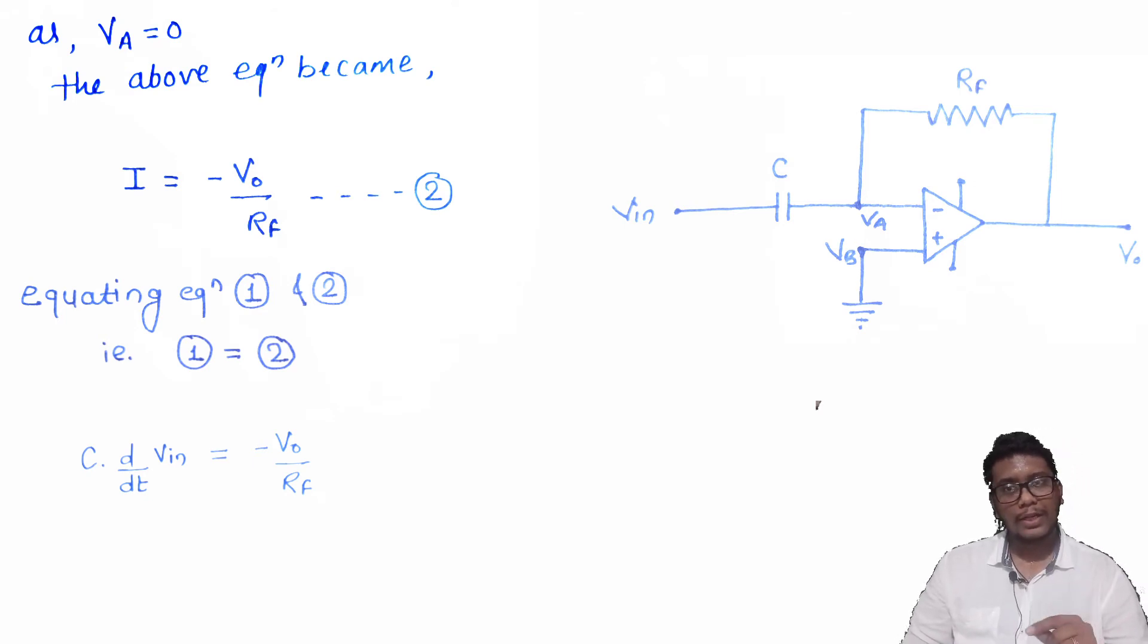The RF which is in the denominator goes to the numerator on the other side and it will become minus V0 is equals to C into RF into d/dt of VIN. This is the expression of output voltage VO.